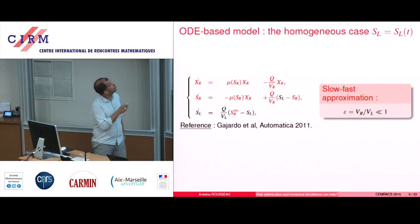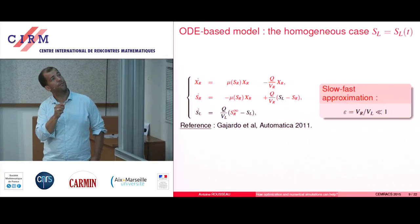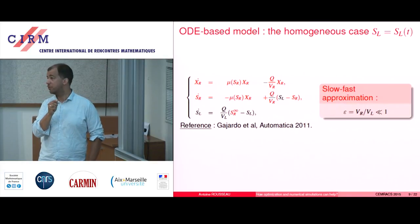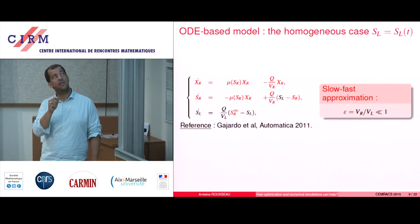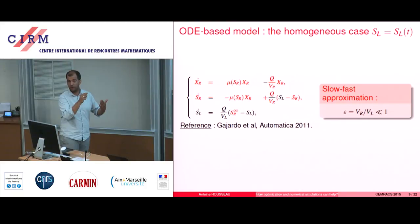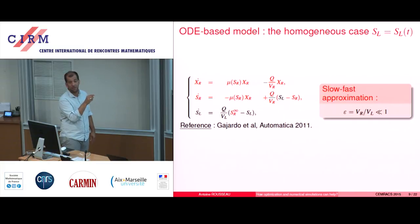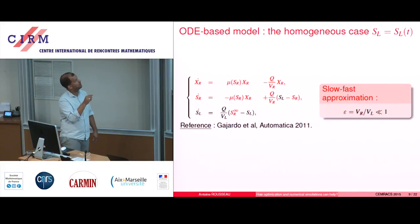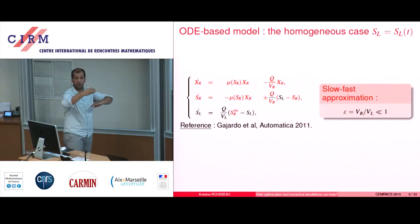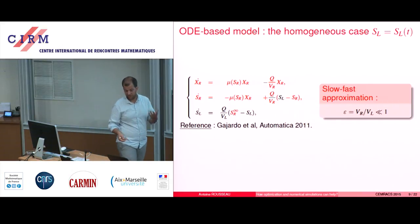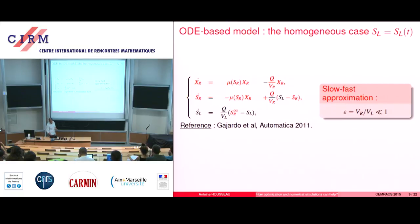What you do is you solve the fast dynamics — so the bioreactor by itself. You take the asymptotic value at the small scale; that's why there is an infinity here. You take the limit of what's in the red system and you put it back into the black one. So you decouple the dynamics between the bioreactor and the lake. And this makes things much easier.